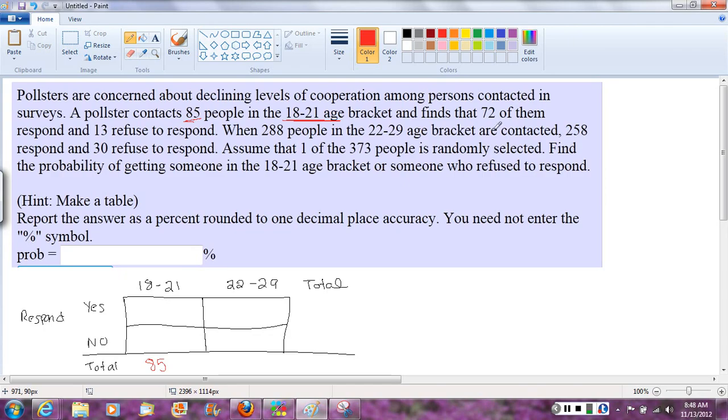Now it says 72 of them responded and 13 refused to respond. So I go to the respond category and I say, okay, 72 of them responded, 13 refused.